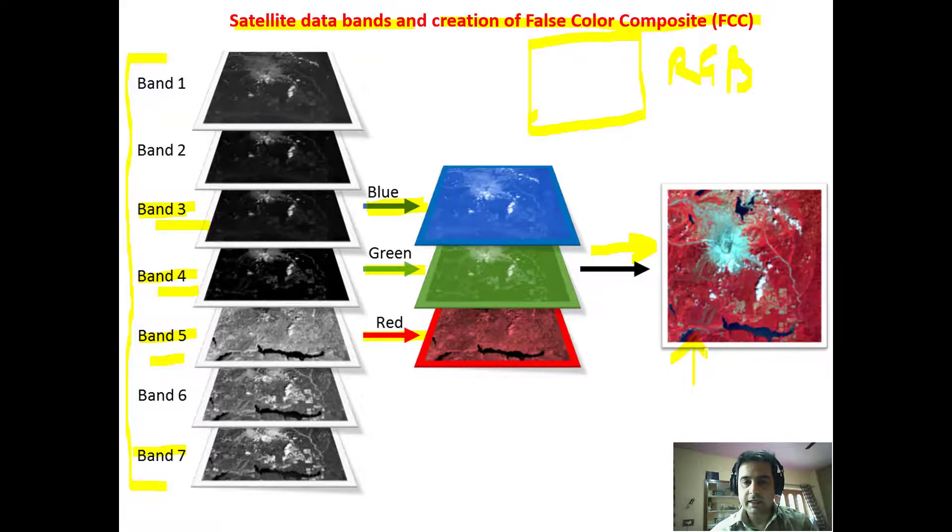So here we see we get an image that is composed of three bands overlaid on each other, and we get a false color composite. Here, try to understand that all the vegetation is seen in red, but vegetation actually exists in green color. And the cyan color that you see here is the habitation, and this blue color signifies water.